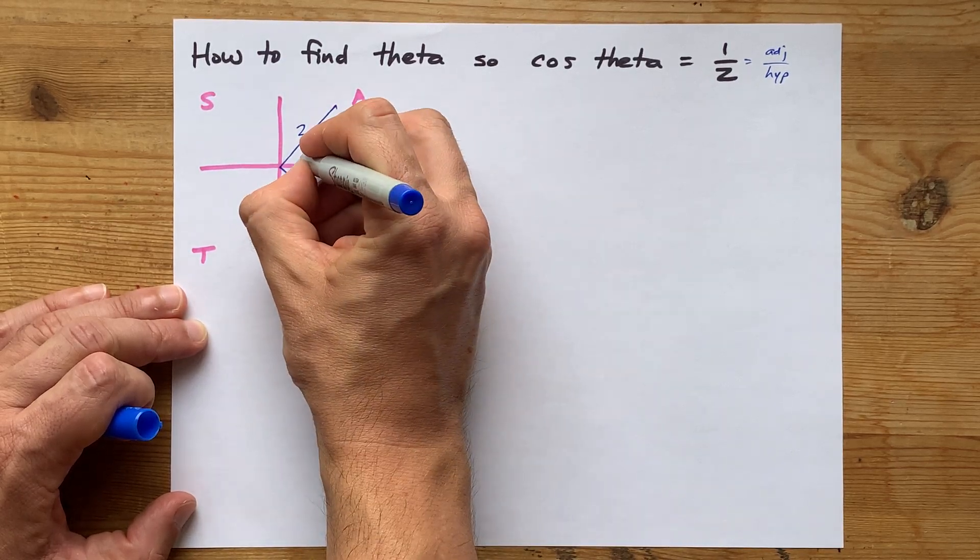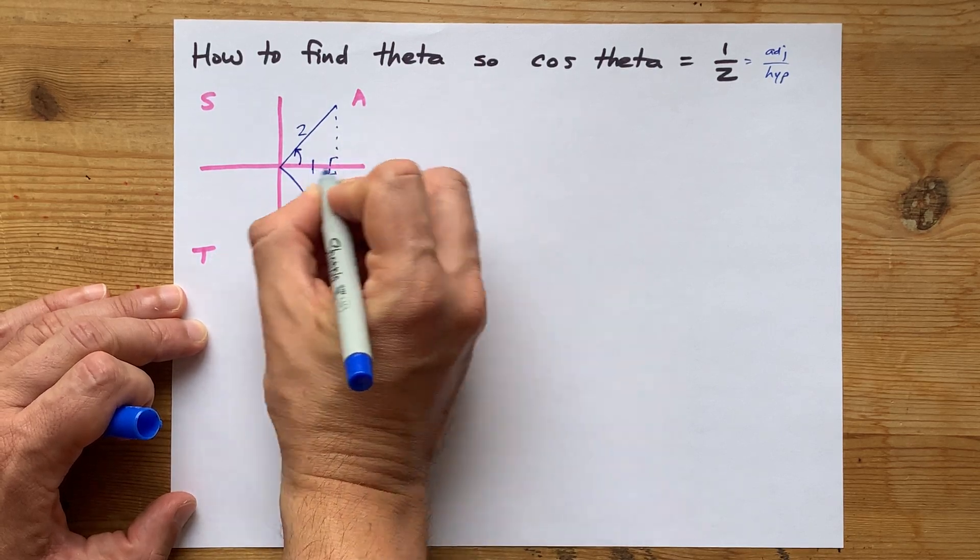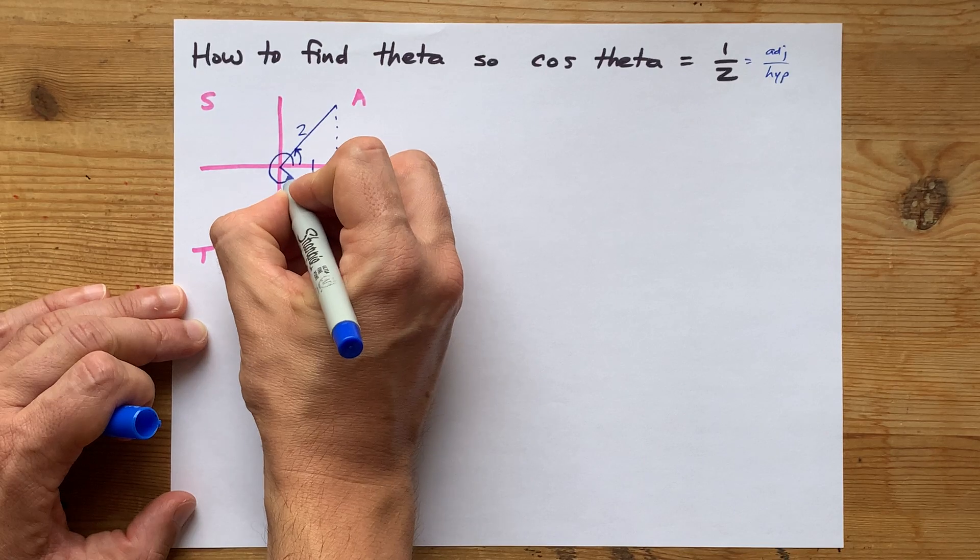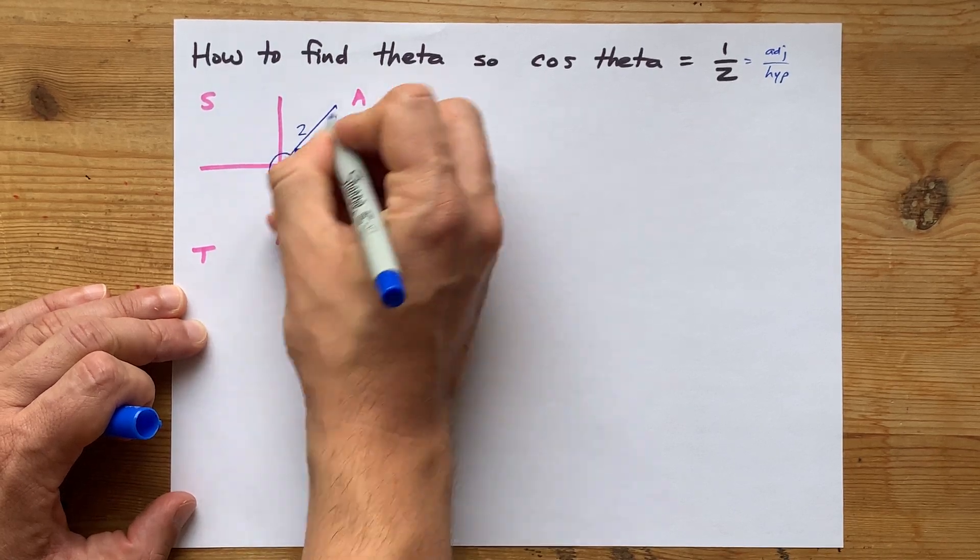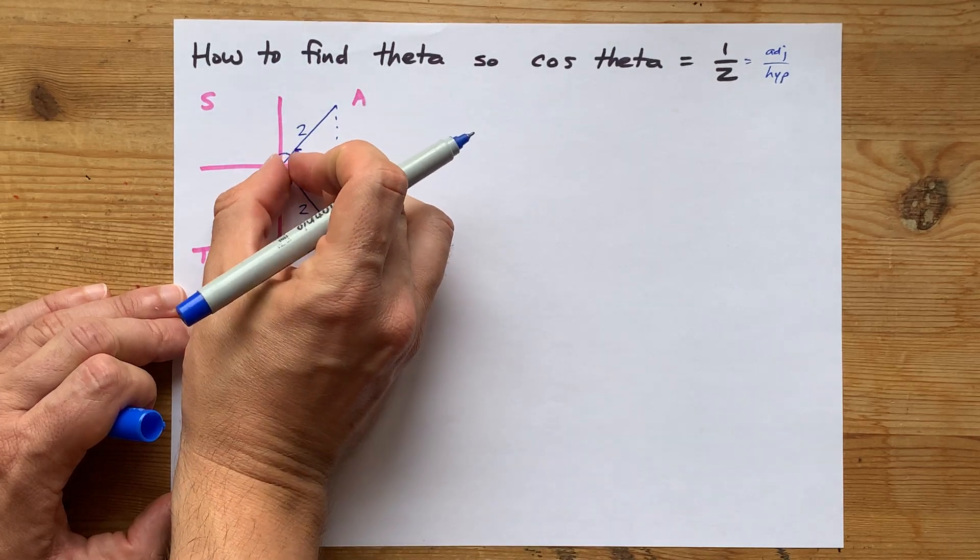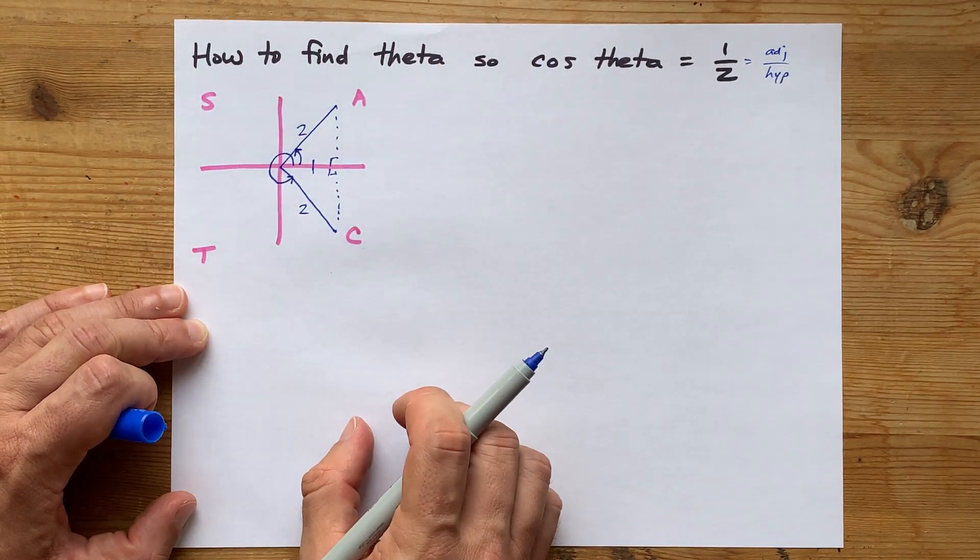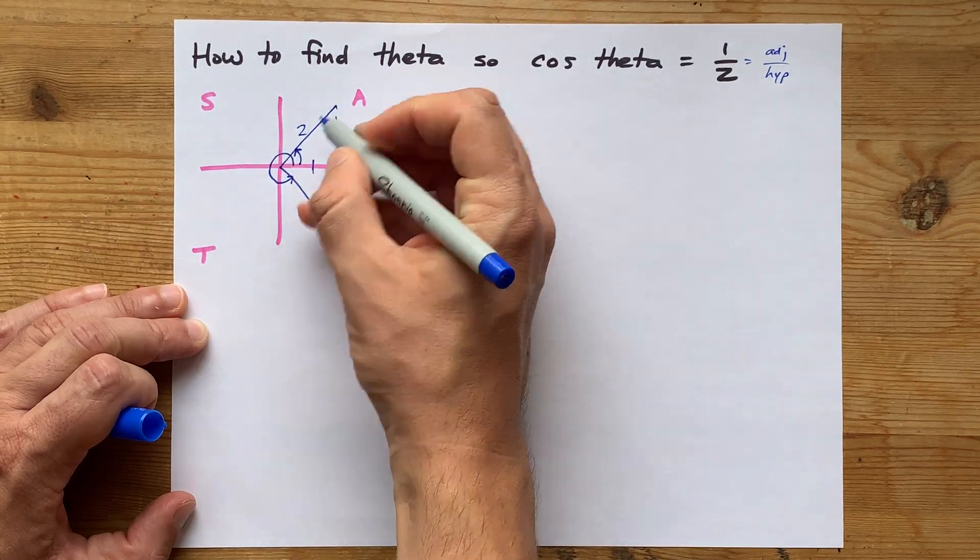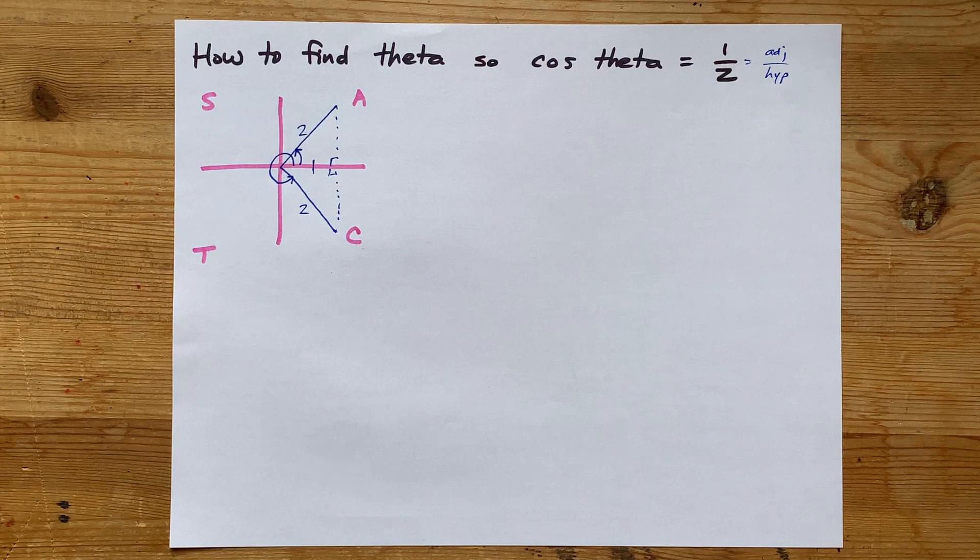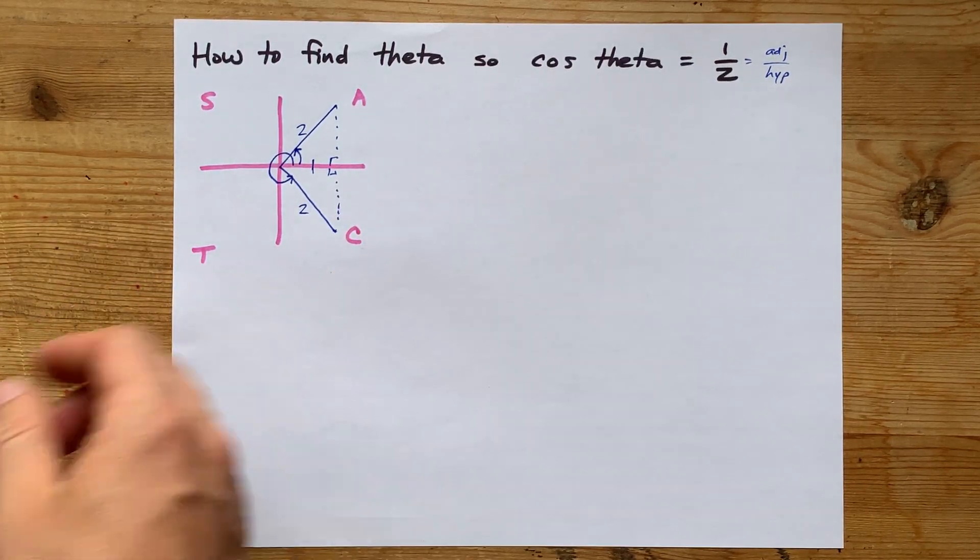So what you're being asked for is the angle from zero degrees all the way around to either of these arms, or a line segment that is two long, as in the number two. So the question is, what angles are those?